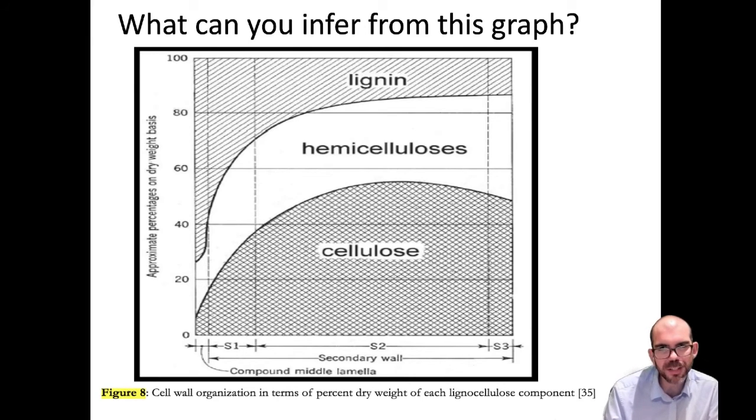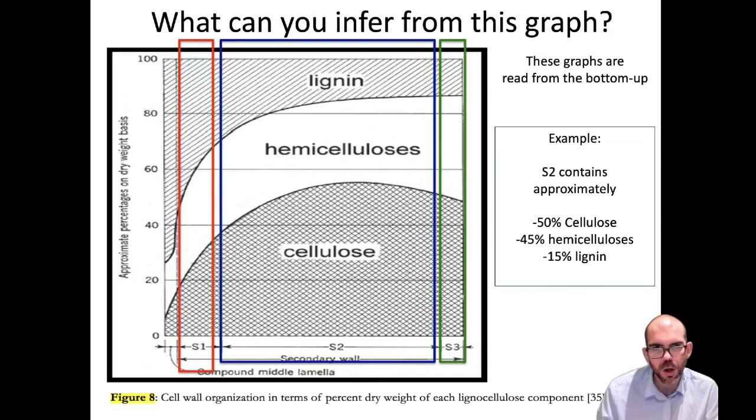Here's another graph, and the kind you probably haven't seen before. What could you infer from this graph? Well, if you look at the y-axis, I have approximate percentages on dry weight basis. And on the x-axis, I have different components of a cell. This graph is actually showing you different percentages of a substance based on what they're made of, based on the section we're analyzing. So you can see I've drawn boxes on each one. I've made S1 red, S2 blue, and S3 green. If I look at the S2 slice, out of 100% of this cellular component, I can say that approximately 50% is made of cellulose, 45% is made of hemicelluloses, and 15% is ligand. This is just showing me different percentages of a whole. I have a cell part, looking at part of the secondary cell wall, and what each component is made of. For this, I'd read it from the bottom up, because you can see at the bottom of the graph, I have 0% going up to 100%.